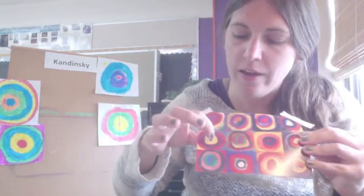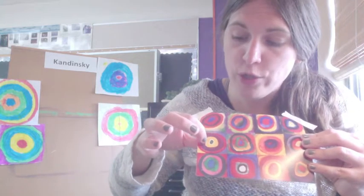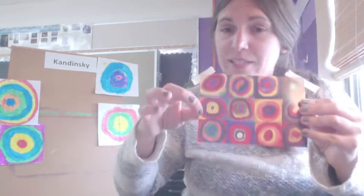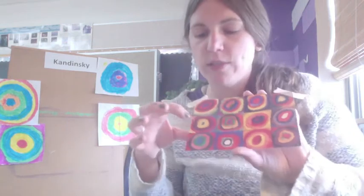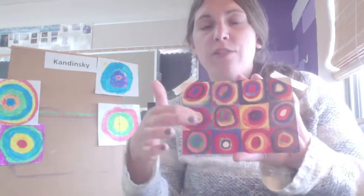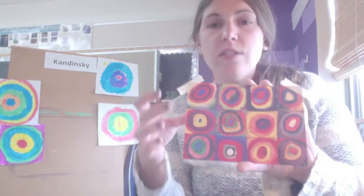You'll notice he had one in the middle and then one, two, three more rings. If you would like to try to make a painting just like Kandinsky, you would do a dot in the middle and then paint three more rings outside that dot. You'll also notice that Kandinsky tried to not let the colors touch and he tried to use colors that were complementary — colors that would help the others pop.